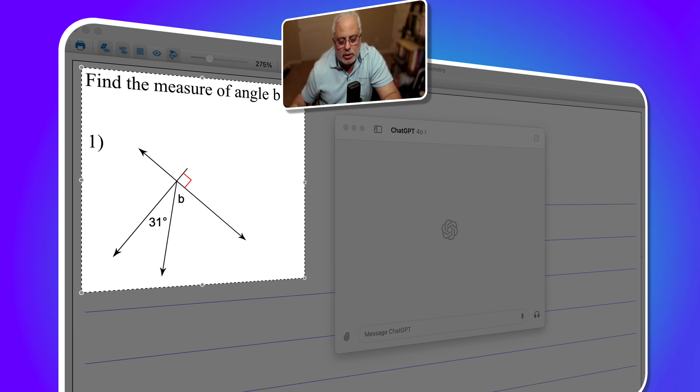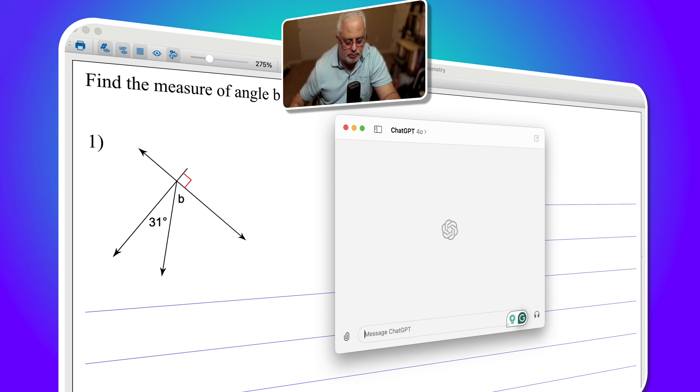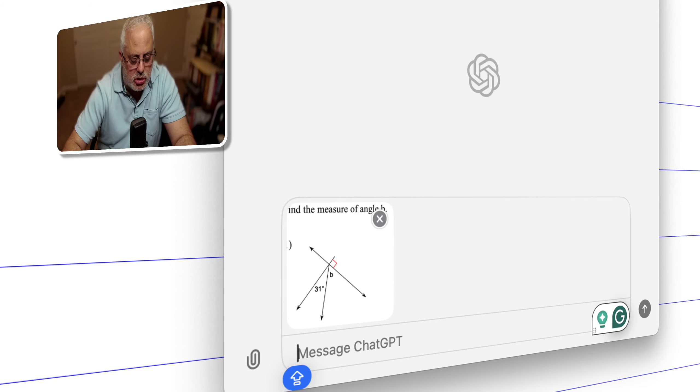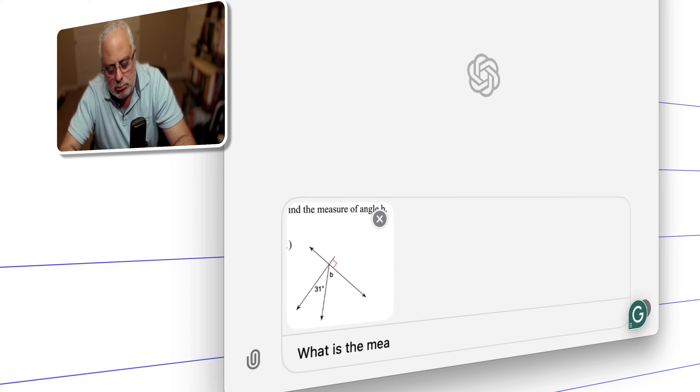So I'm going to capture this. I'm going to paste it right here. And I'm going to ask ChatGPT, what is the measure of the angle b? Let me see what happens.